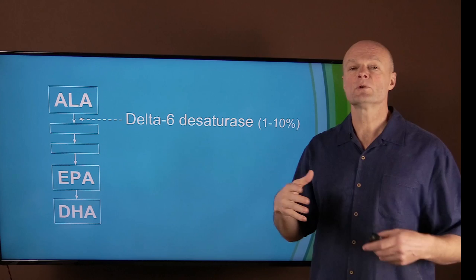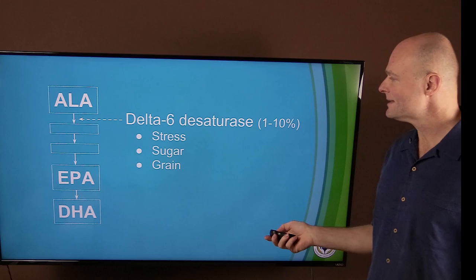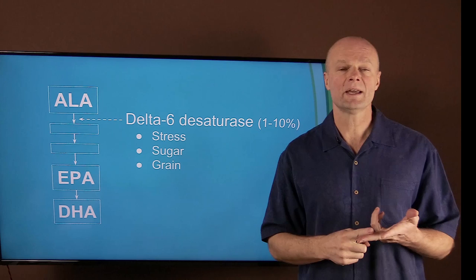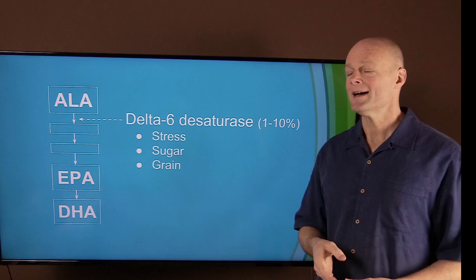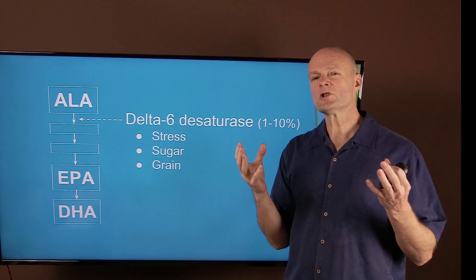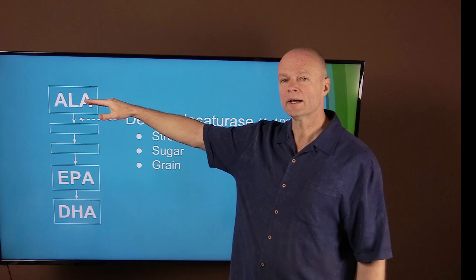So what are some of the factors? Well, this enzyme is inhibited by stress and by sugar and by grains. So all of the things that are abundant in our modern life has the tendency to turn off this conversion. So if you're super healthy, then you could probably get away with eating flax oil and converting as much as you need into EPA and DHA.